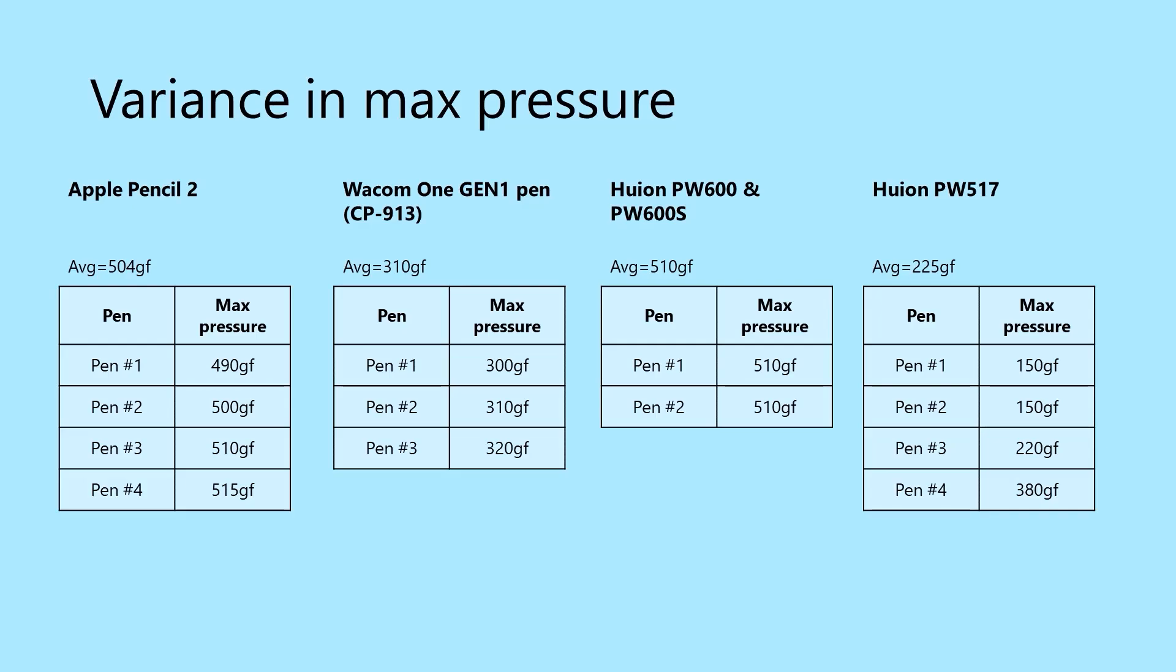These are actually two different models, of course, but they share the same technology, so I thought it was fair to treat them as if they were the same pen model. The PW517 pen from Huion really surprised me. I have four of these pens, and the maximum pressure I found was all over the place. It did average out to 200 gram force, which is what I expect.